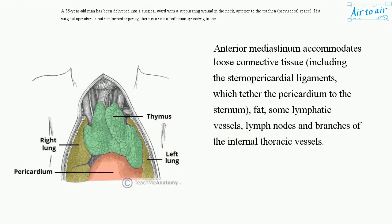Anterior mediastinum accommodates loose connective tissue, including the sternopericardial ligaments, which tether the pericardium to the sternum, fat, some lymphatic vessels, lymph nodes, and branches of the internal thoracic vessels.